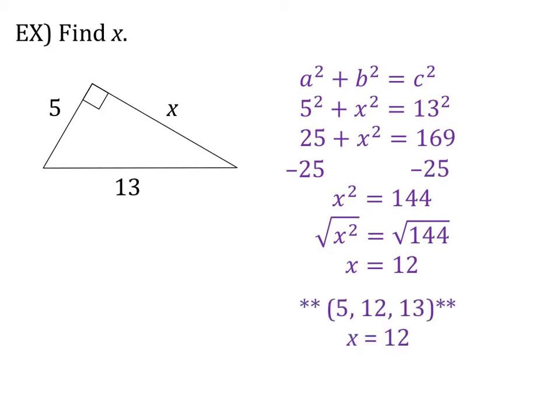Also, some of you may have noticed that this was a triple. It was a 5, 12, 13 triangle. So if you were taking a test or a quiz, you would write down the Pythagorean triple 5, 12, 13, and then you could say that X is equal to 12.